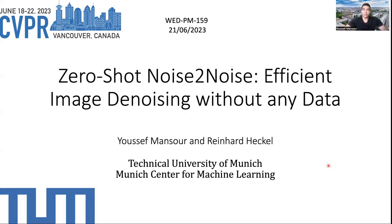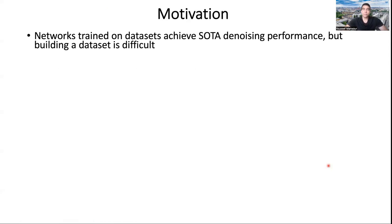Welcome, everyone, to the presentation of our CVPR paper, Zero-Shot Noise-to-Noise. As we all know, neural networks trained on a dataset achieve state-of-the-art denoising performance. But the problem is that building a dataset is difficult, expensive, or in some cases not even possible.